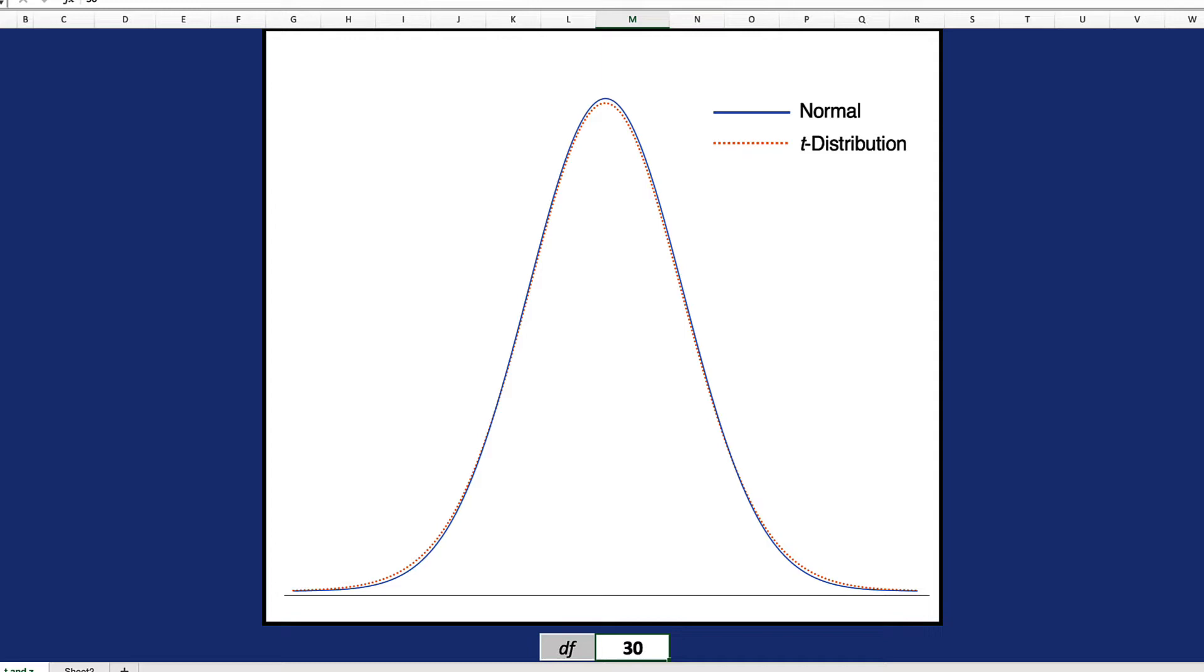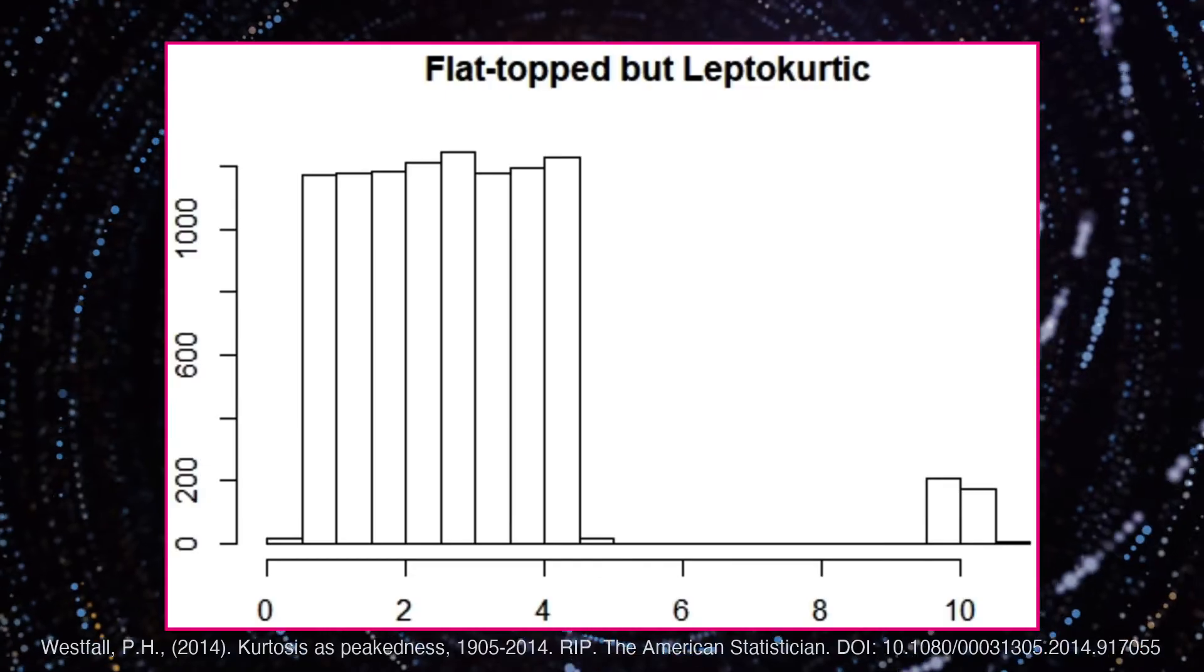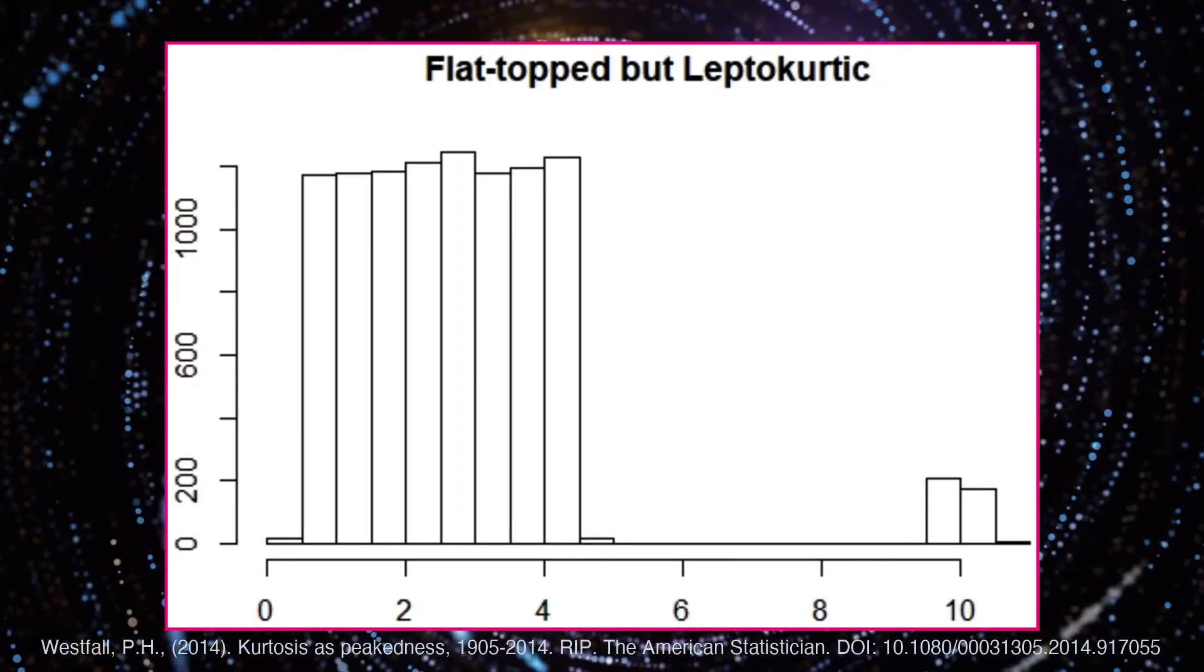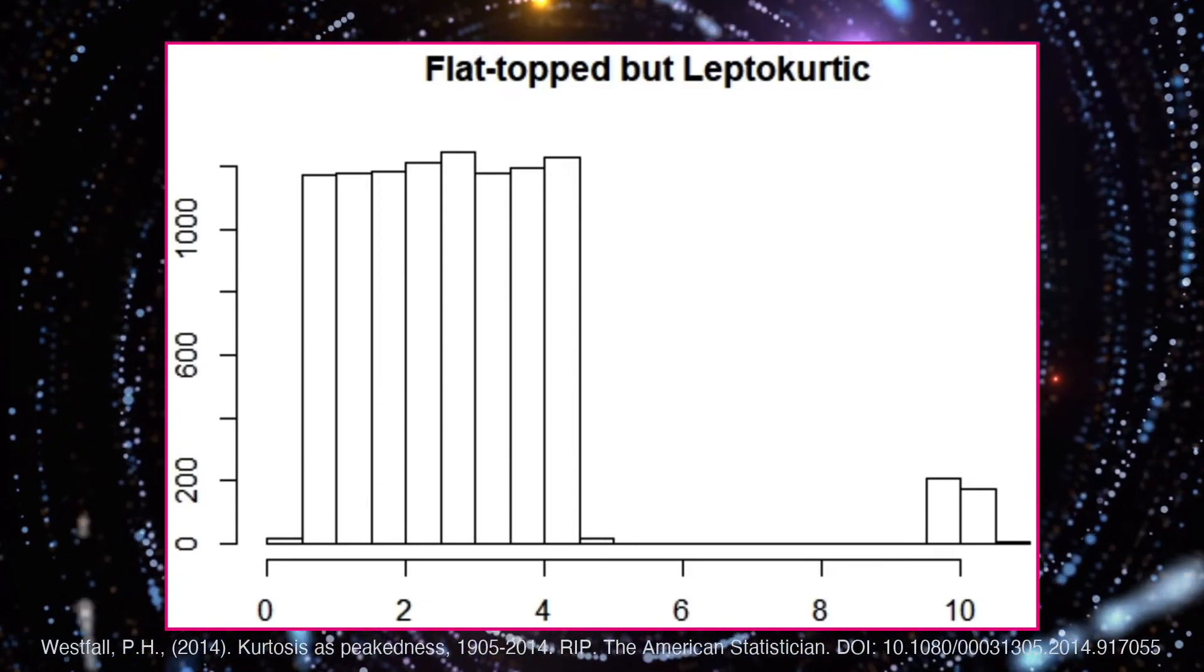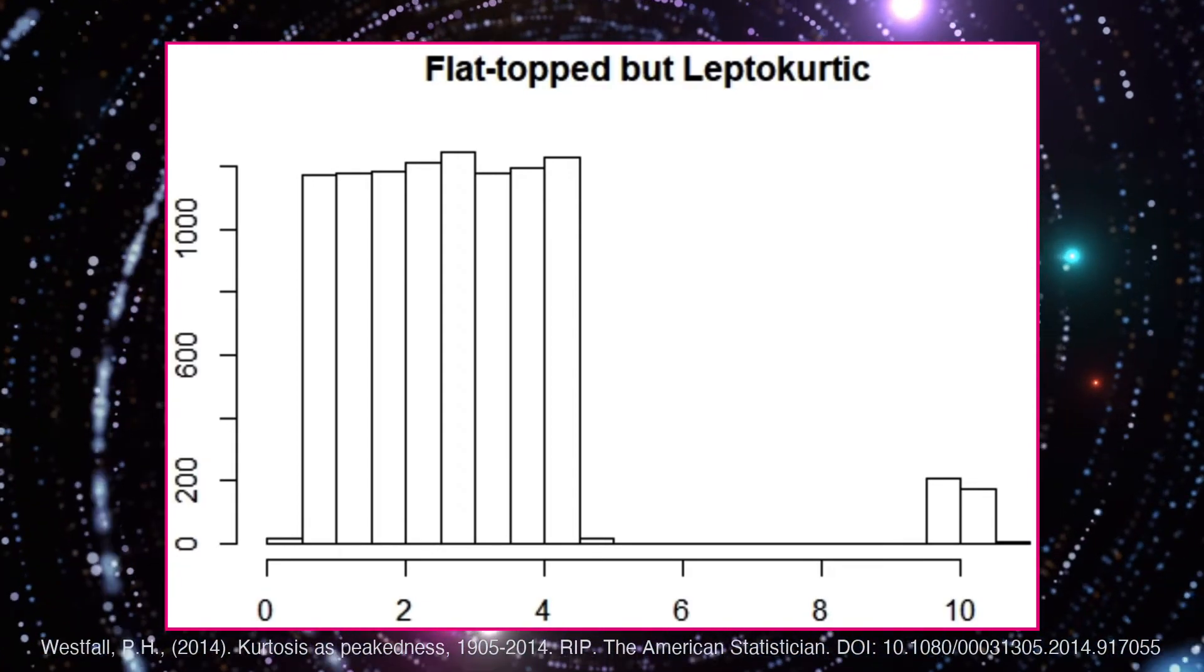Note that I'm using the normal curve for comparison here, which may not capture the true significance of kurtosis. For example, this is a leptocurtic distribution, even though the top is clearly flat.